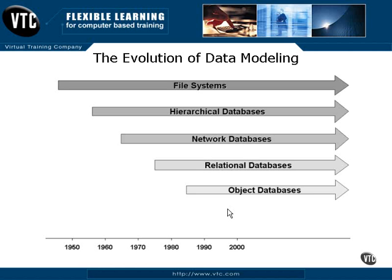With a relational database, you don't have to do that. An object database is extremely capable of handling highly complex applications and structures, but serves generally very specific application types compared to relational databases. An object-relational database was invented to counter the competition of object databases with relational database vendors, combining the best aspects of both. That's the evolution of data modelling, all the way from the mid-40s through and beyond Y2K.